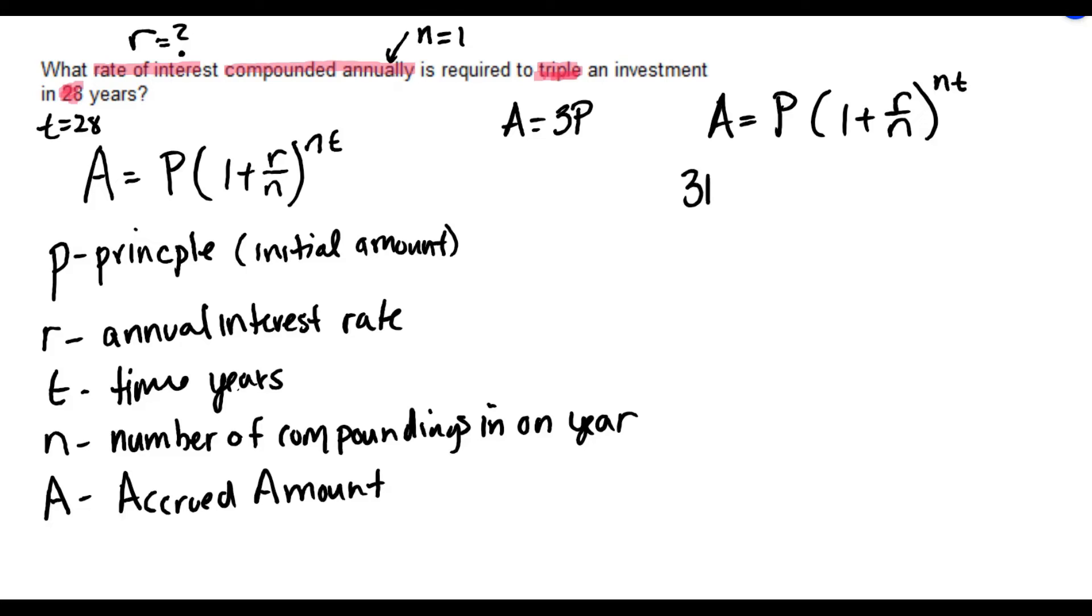A is 3P. We're trying to triple our investment. P, 1 plus R is our unknown. N, the number of compoundings is 1. And 28, N for time.